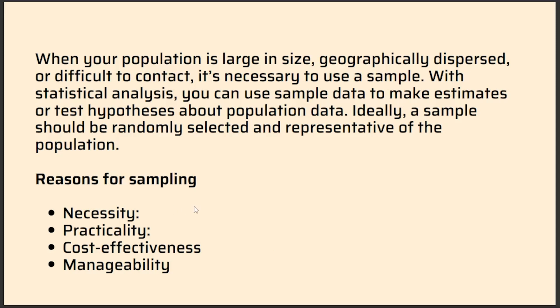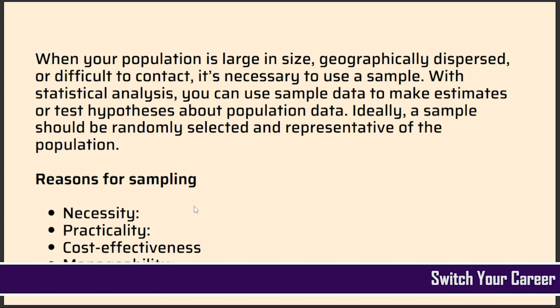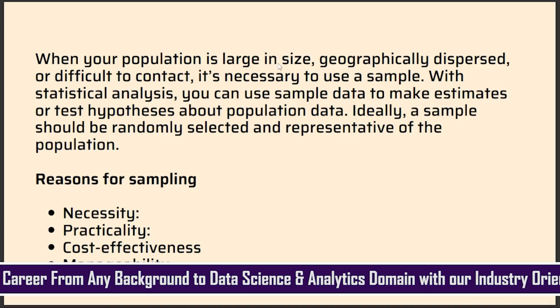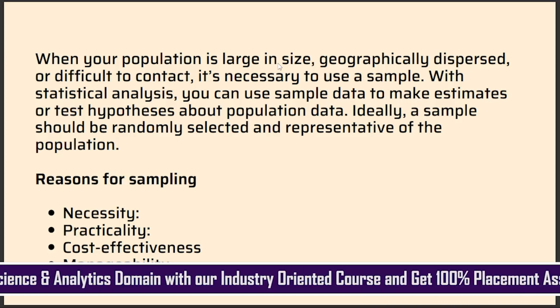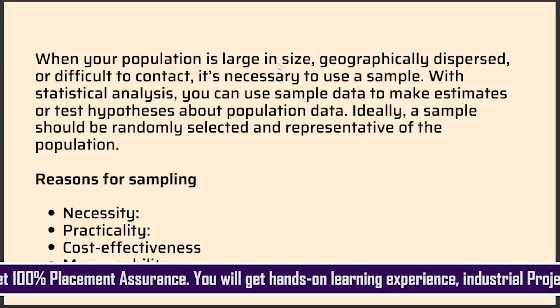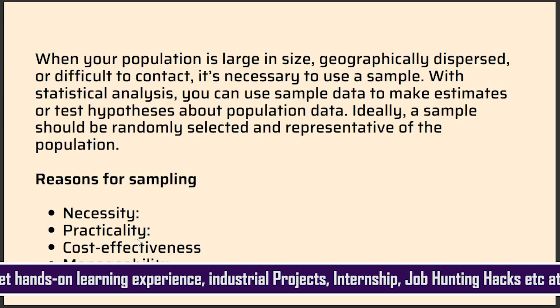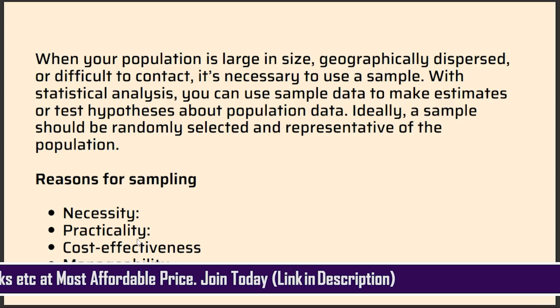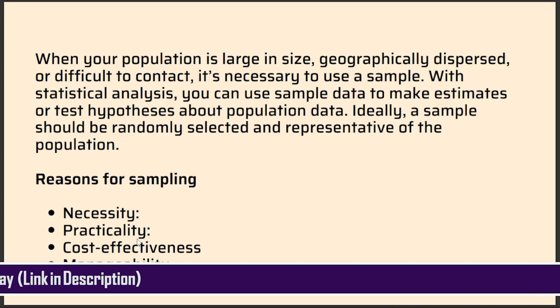These are the four reasons that are needed for sampling. Sampling is the technique of collecting samples from the population. The first reason is necessity — it is very necessary to do sampling under certain conditions such as when your population is large in size, geographically dispersed, or difficult to contact. In such a case you need to use the sample. Next is practicality — because being small in size, the sample is very practical to use rather than dealing with a huge amount of population data.